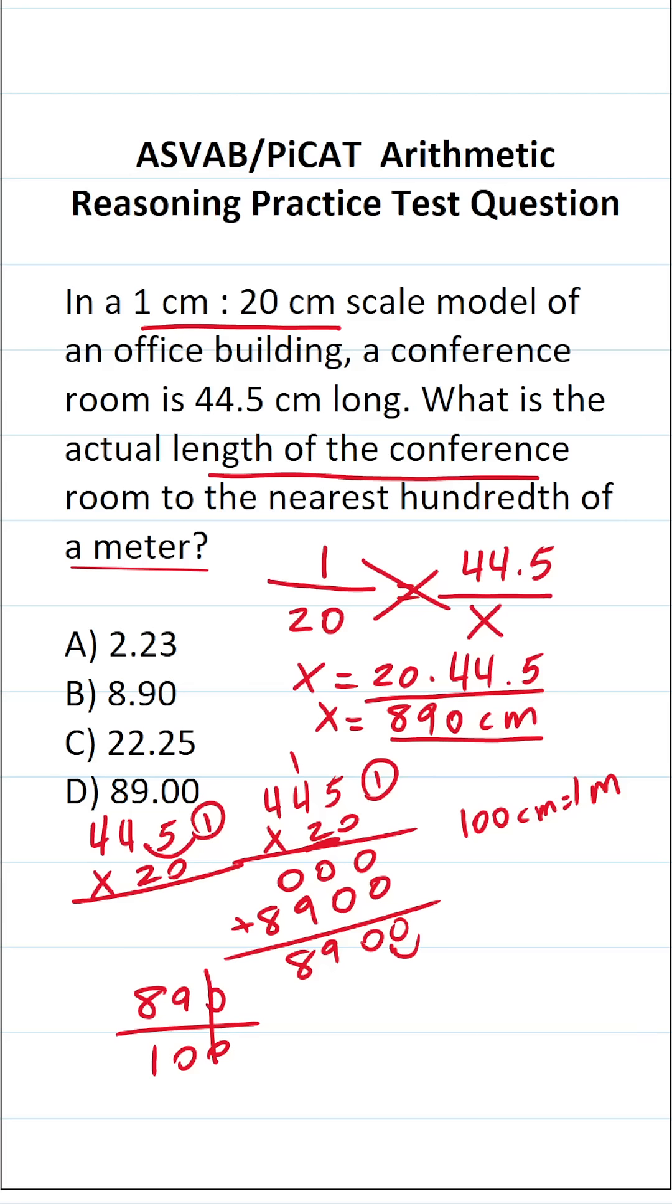Cross out these corresponding zeros. This becomes 89 divided by 10. This is very easy to do mentally. All you have to do is take the decimal in 89. And since we're dividing by a power of 10 with 1, 0, we're just going to shift it one time to the left. So this becomes 8.9 meters.